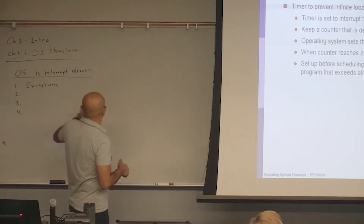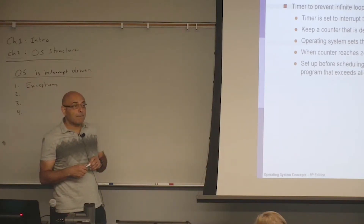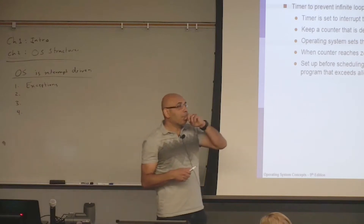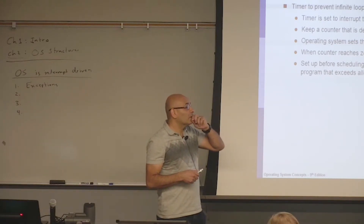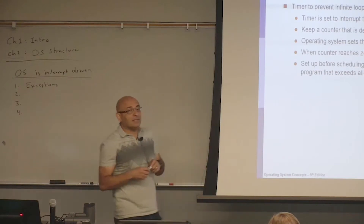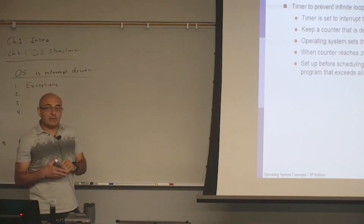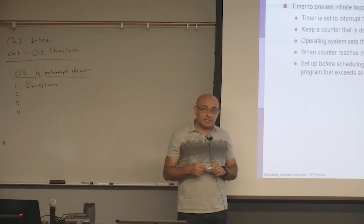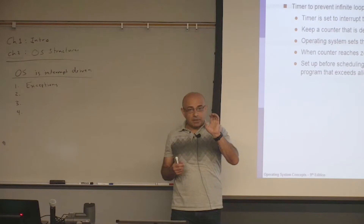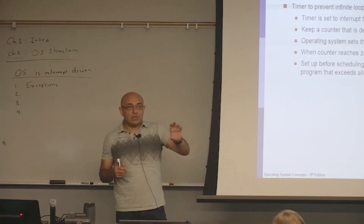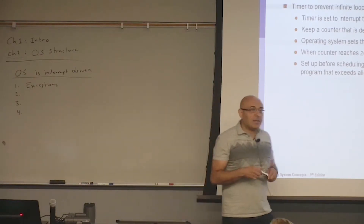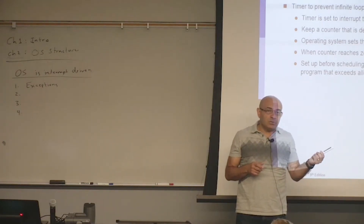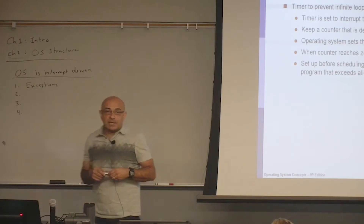When these exceptions occur, what happens? The OS gets control and terminates the process that is trying to do something wrong. And that provides protection — it protects the system. The idea is that if one process is trying to do something wrong, we should terminate that process in order to protect the system.